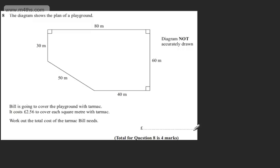This is question number 8 and it carries 4 marks. We're told the diagram shows the plan of the playground. Bill is going to cover the playground with tarmac. It costs £2.56 to cover each square metre with tarmac. We're asked to work out the total cost of the tarmac Bill needs.